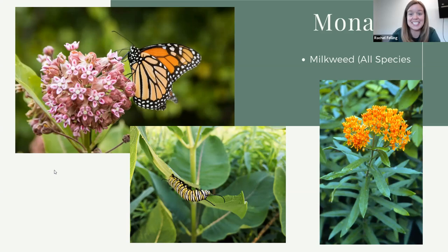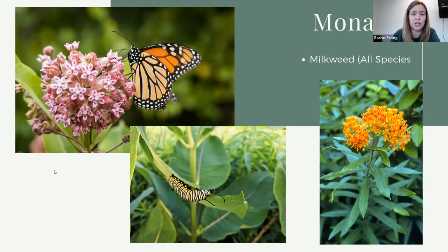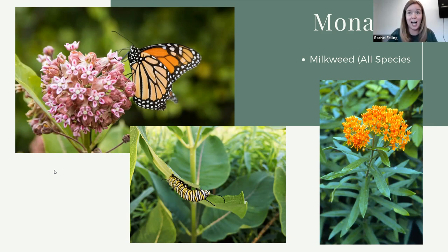Monarchs are a specialist — they have to have milkweed, they cannot lay their eggs on any other species. Monarchs are not the only thing that uses milkweed as a host plant; there's a moth called the milkweed tussock moth that also lays its eggs on milkweed and has a very furry caterpillar that you may find if you have some milkweed planted. And there are different species of milkweed too.